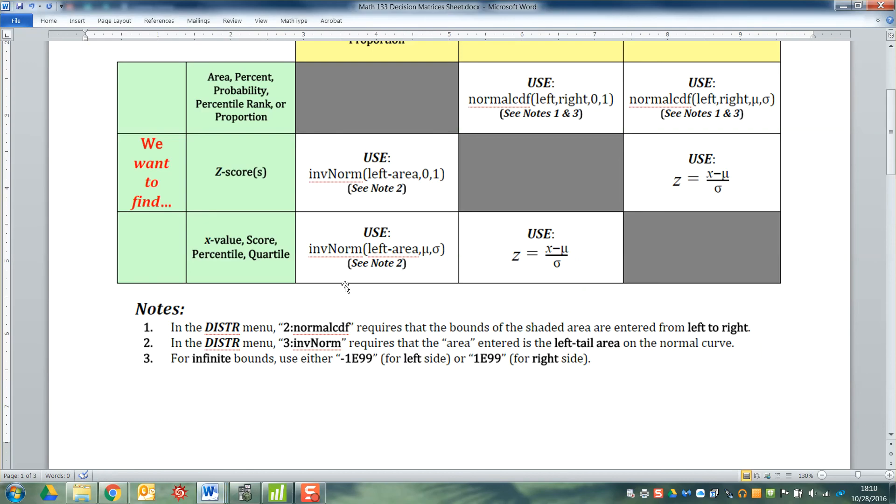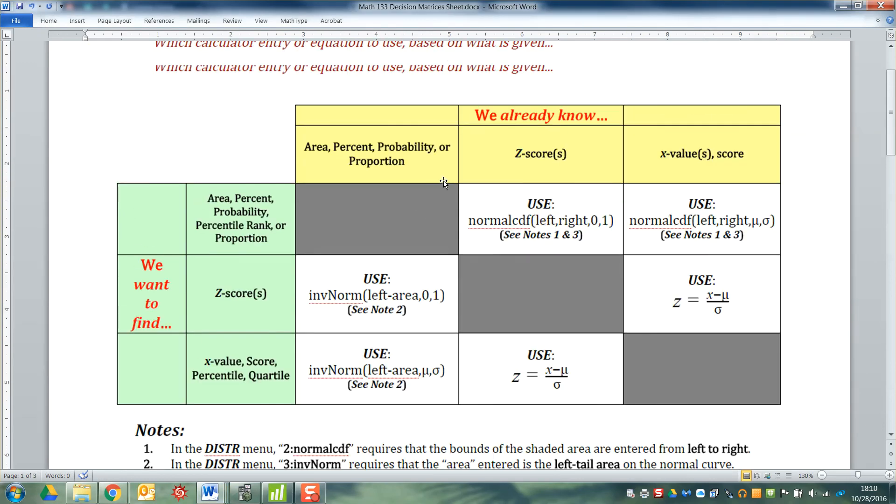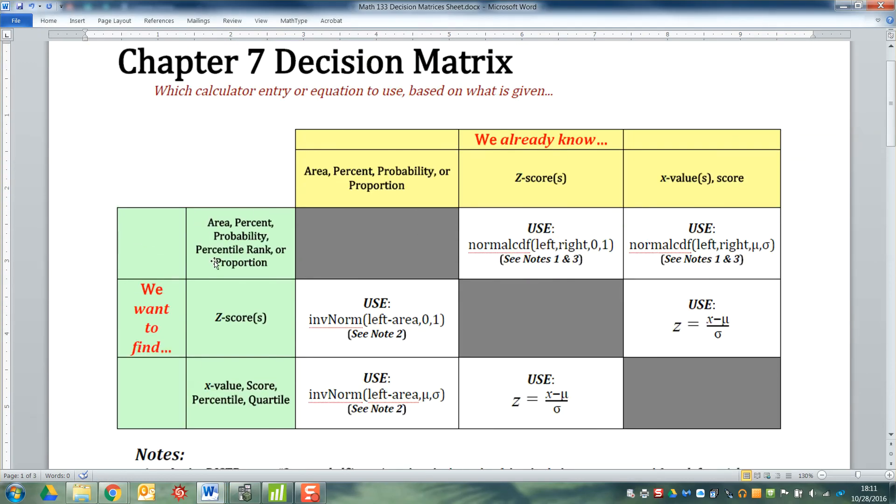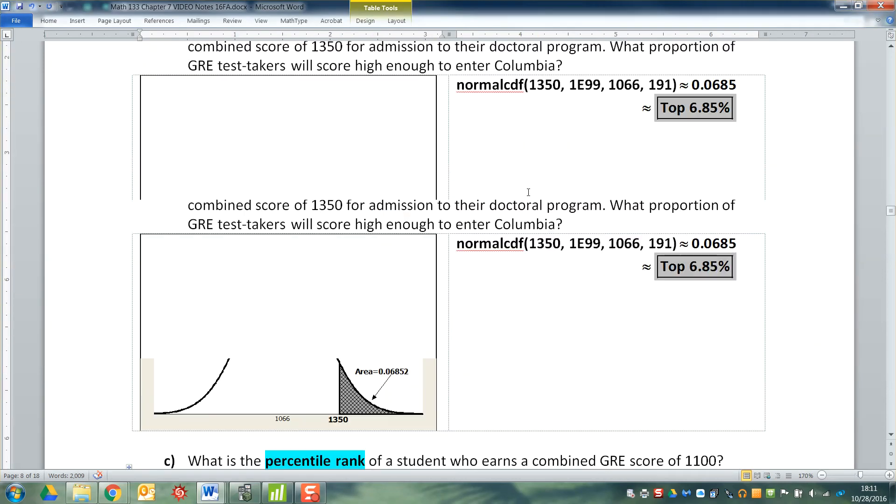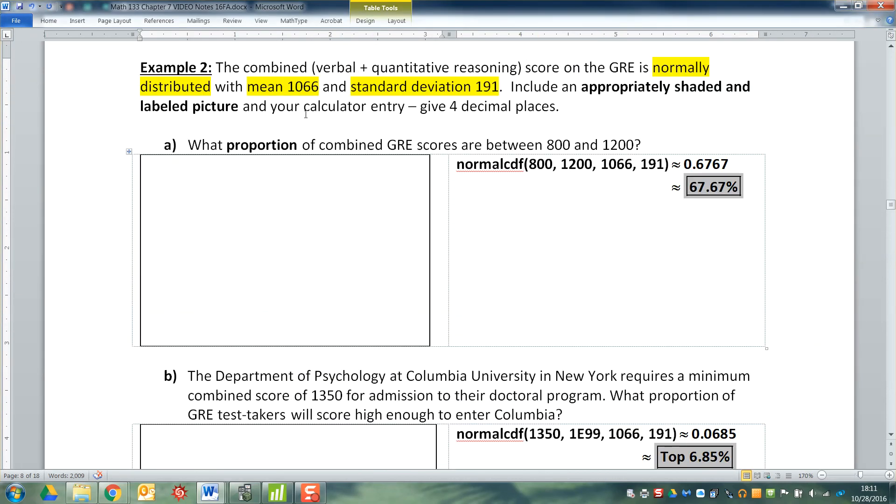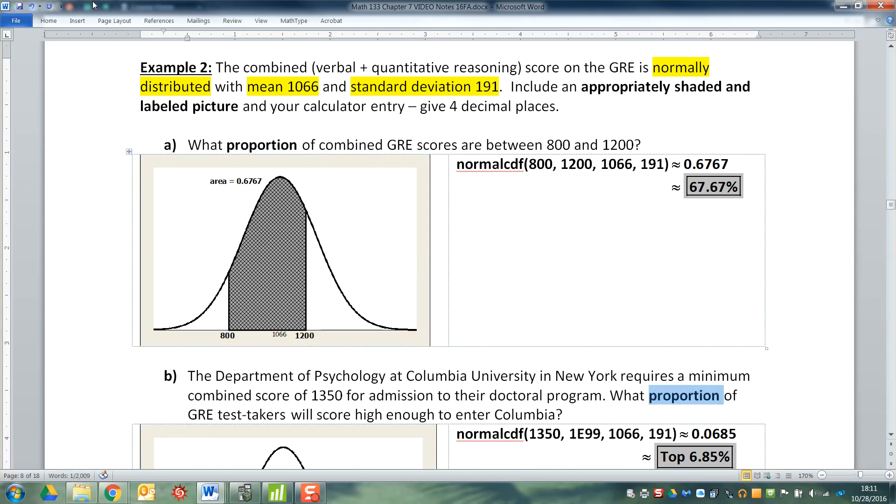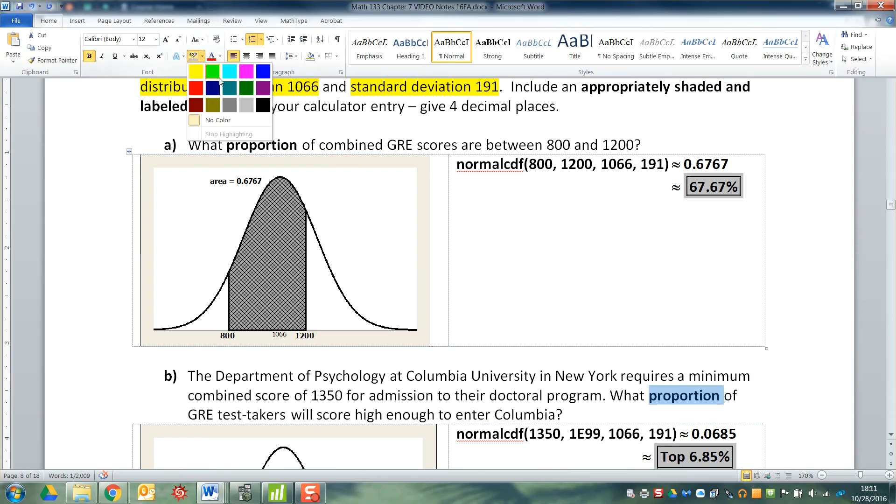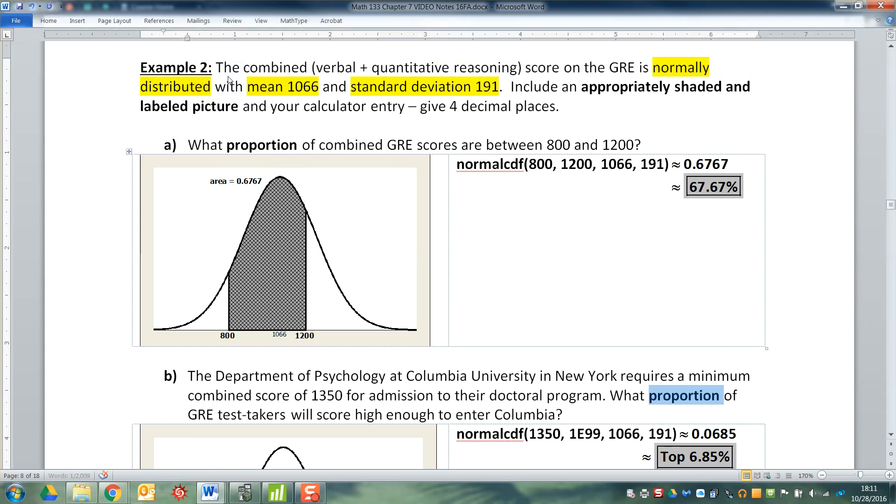Now let me go back to the decision matrix real quick and just get you to notice, if you look at the top green box right here, it says area, percent, probability, percentile rank, and proportion. When you look back at the problem, you can see it asks, what is the percentile rank? What is the proportion? What proportion? See those words right there? Those are your question words. They're queuing into you which portion of the decision matrix you're going to use.